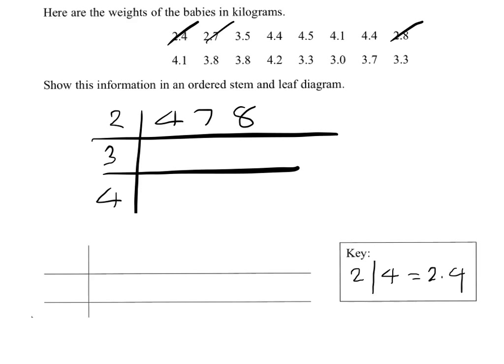So luckily that one was in order. If we now go to the 3's, I've got a 5, I've got an 8, I've got another 8 and a 3, a 0, a 7 and a 3.